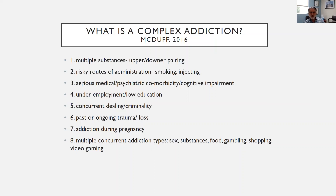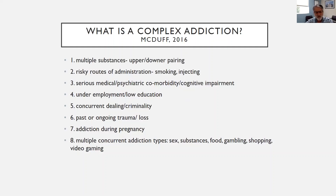Dave McDuff, the lead psychiatrist for the Orioles and the Colts and an addiction specialist, developed this model of complex addictions, which I've expanded upon. There are multiple domains that can make a case complex. The first is multiple substances, especially upper and downer pairing. Khantzian developed the self-medication hypothesis of addictions — people palliate emotional turmoil by using uppers if depressed or downers if anxious. Sometimes patients use uppers and downers together, like amphetamines and alcohol or methamphetamine and opiates, which makes cases much more complex.